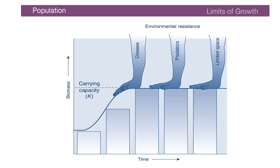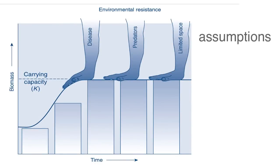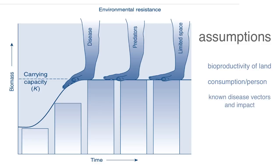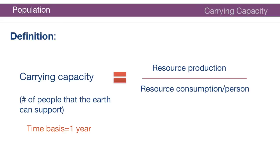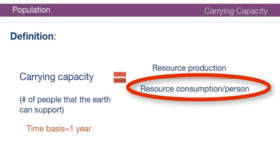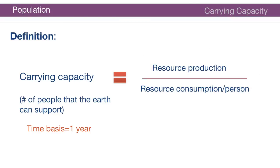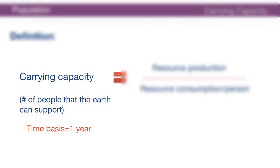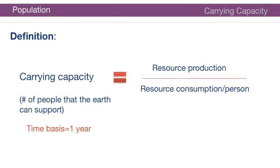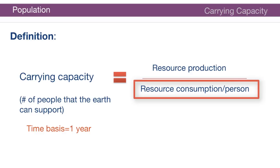Normally we consider humans as the beings whose lives need to be supported, so carrying capacity refers to the ability to grow food, provide water, and absorb wastes produced by human activity. There are a great deal of assumptions hidden in the notion of carrying capacity, but as a concept it helps us get a gross approximate understanding of the upper limit. The carrying capacity represents the resource production of a region divided by the resource consumption per person, yielding the number of people that can be supported — typically on a per-year basis.